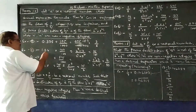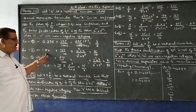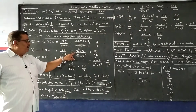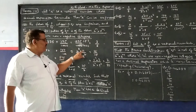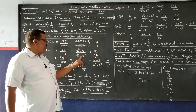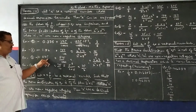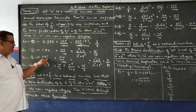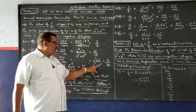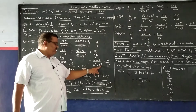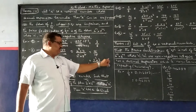Similarly, 1.04 can be written by multiplying numerator and denominator by 100 to get 104 by 100. After factorization and cancellation of 2² and 2², we get 2 × 13 = 26 by 25 (which is 5²). This is also p by q form. For the third example, 0.875 multiplied by 1000 gives 875 by 1000. After prime factorization, 5³ cancels and we get 7 by 80, which is p by q form.